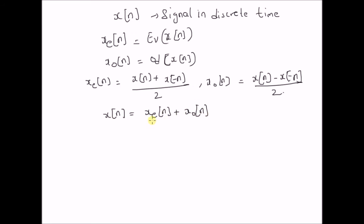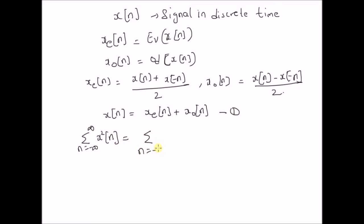That is, a signal can be split as an even component and an odd component. So, using this definition, we want to prove that the energy of the signal — that is, summation n equal to minus infinity to plus infinity of x squared of n — can be written as the sum of x_e of n plus x_o of n squared.